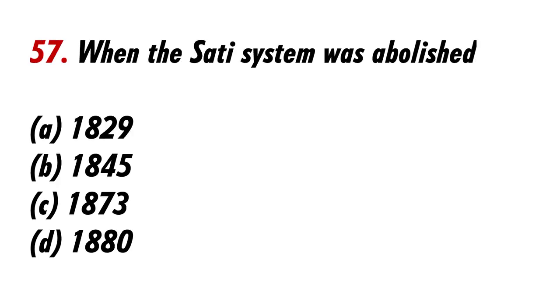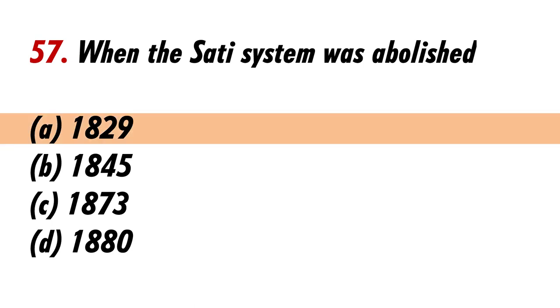When was the Sati system abolished? Answer A: 1829.